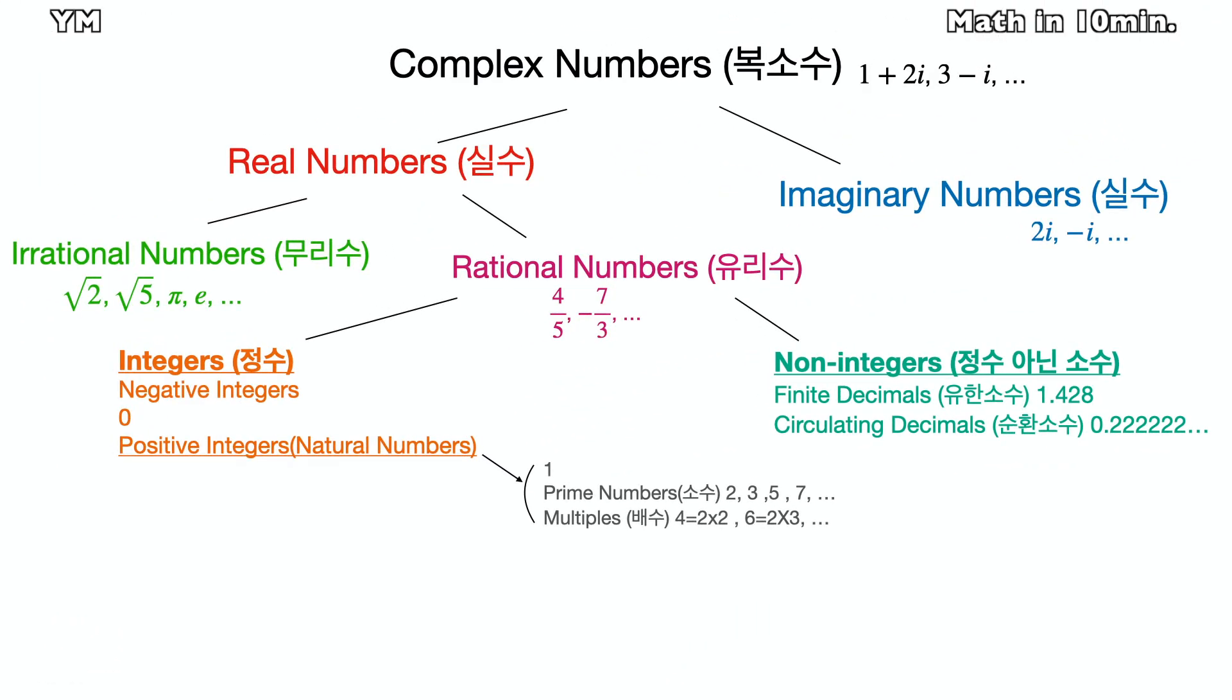This is the concept of numbers up to complex number. We first start learning the counting numbers such as 1, 2, 3, 10, and so on. These are called natural numbers.